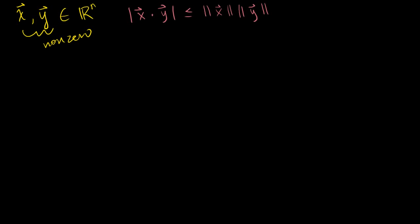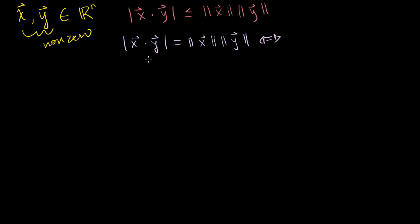To push it a little further: the dot product of the two vectors is only going to equal the product of their lengths in the situation where one of these vectors is a scalar multiple of the other — or they're collinear. One is just a longer or shorter version of the other. So only in the situation where x is equal to some scalar multiple of y. This inequality is called the Cauchy-Schwarz inequality.